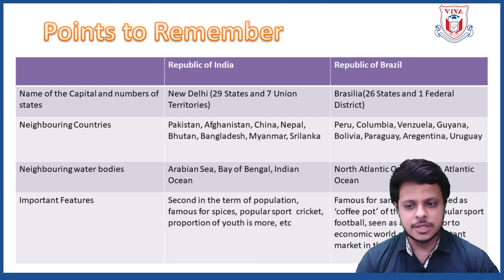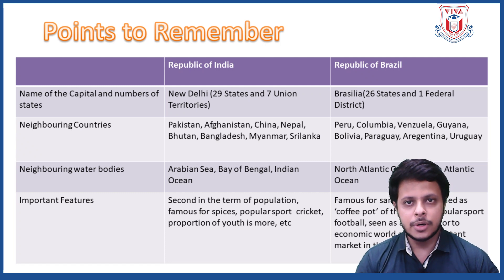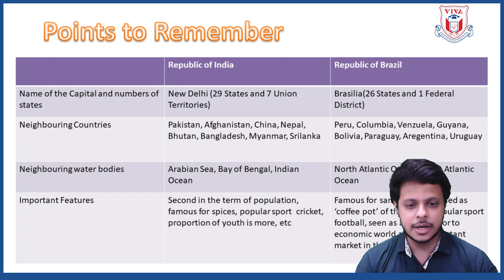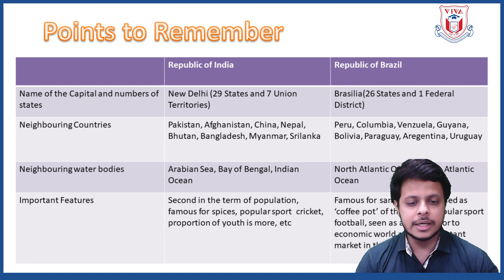The following are the important features. India is second in terms of population, famous for spices in the world, and cricket is the popular sport. The proportion of youth is more in India. Whereas Brazil is famous for Samba dance, it is called the coffee pot of the world, football is the popular sport, and it is seen as a contributor to economic growth and an important market in the future.